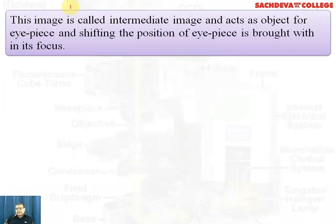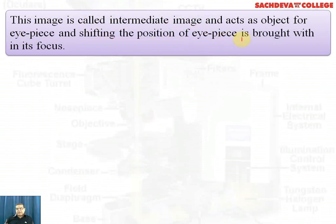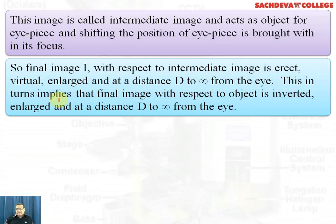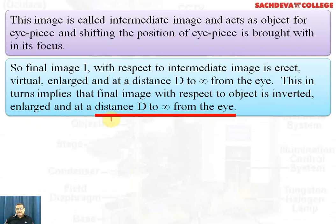This image is called the intermediate image. It acts as the object for the eyepiece, and by shifting the position of the eyepiece, it is brought within its focus. The final image with respect to the intermediate image is erect, virtual, and enlarged — virtual meaning not obtainable on a screen — at a distance D to infinity from the eye. With respect to the original object, the final image is inverted, enlarged, and at a distance D to infinity from the eye.